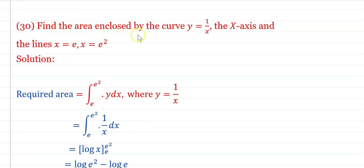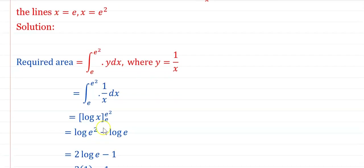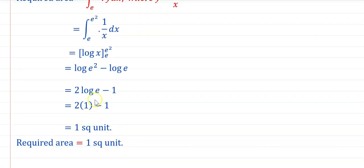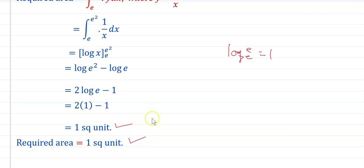Find the area enclosed by the curve y = 1/x, the x-axis, and the lines x = e and x = e². The required area = ∫ from e to e² of (1/x)dx = [log x] from e to e² = log(e²) − log(e) = 2×1 − 1 = 1 square unit.